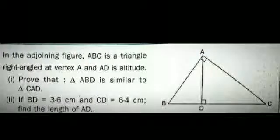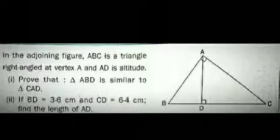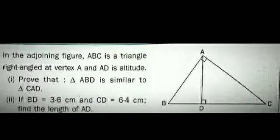Here is a question. In the figure as shown, a right angle is given at vertex A. AD is the altitude drawn from the right angle. Prove that triangle ABD is similar to triangle CAD. Given that BD is 3.6 cm and CD is 6.4 cm, find the length of AD.